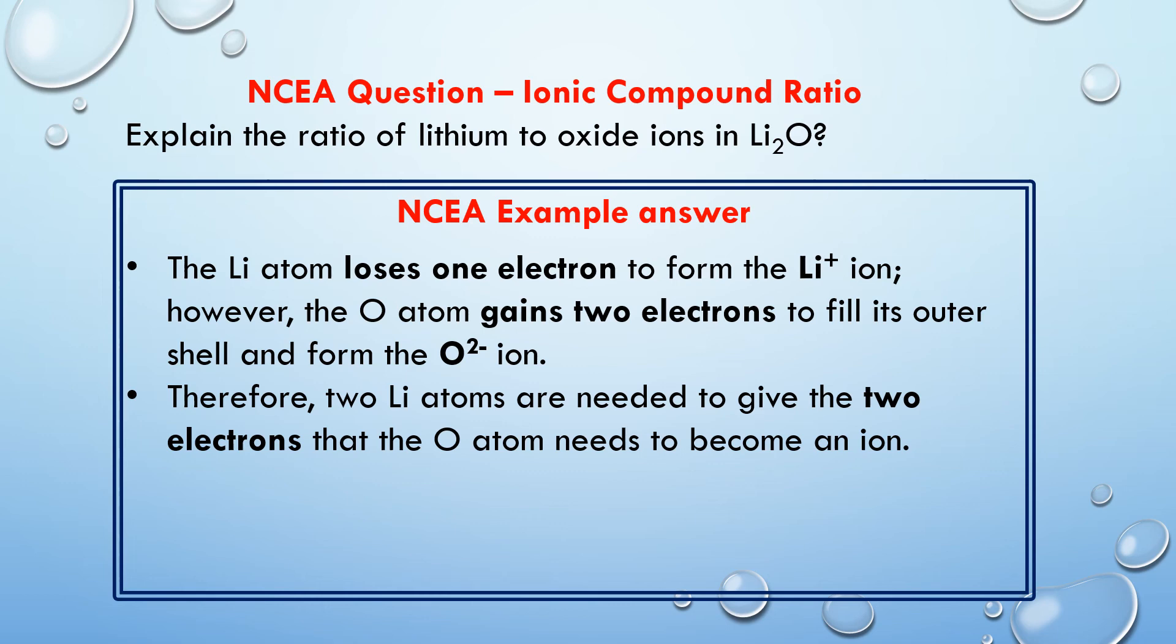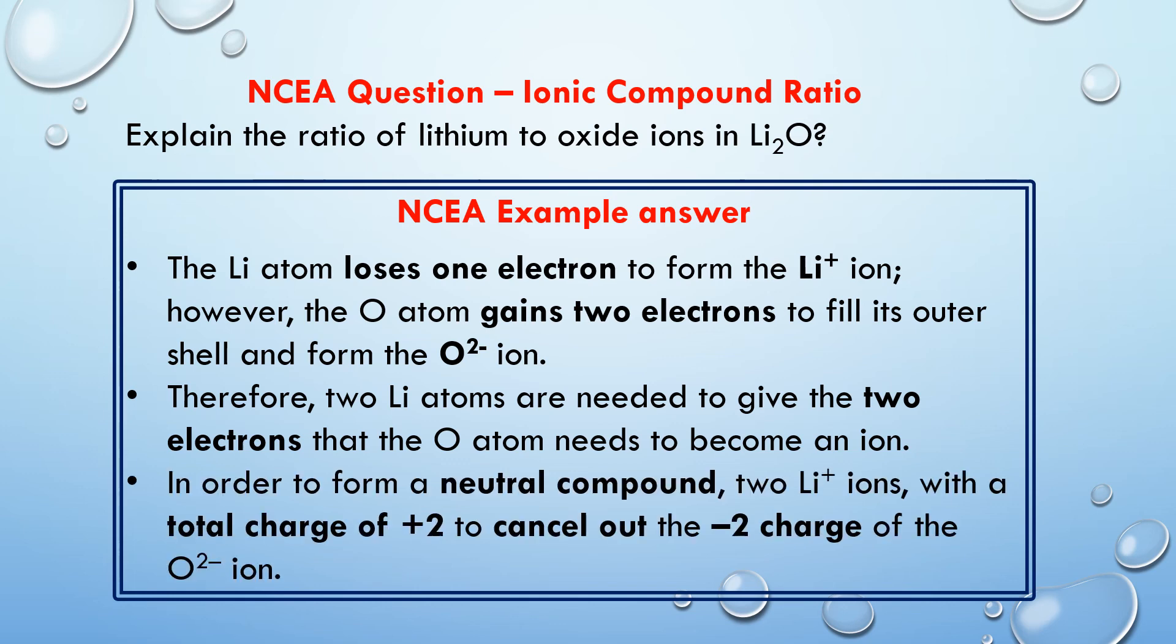The last part we need to say is we need to clearly say that this is so that the compound will be neutral. So we're making a neutral compound and we're going to say that we need two lithium ions, the total charge of two plus. The total charge of the two plus will cancel out the minus two charge of the oxide ion.